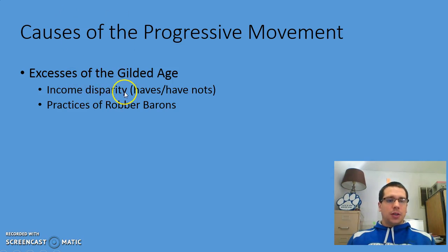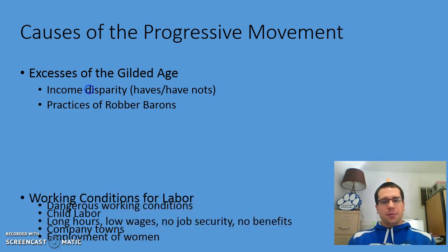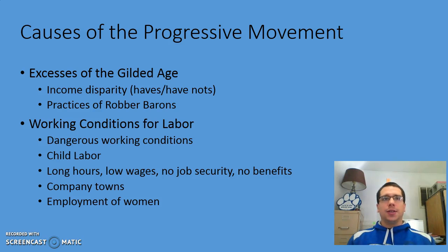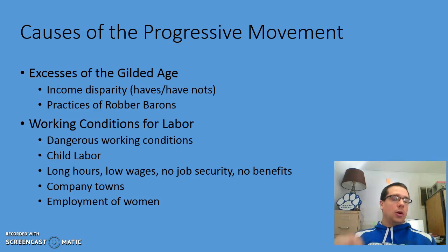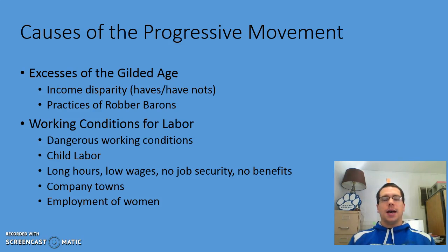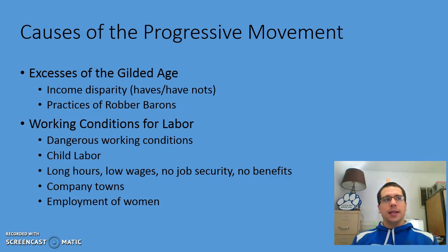The first part is the excesses of the Gilded Age — think the Industrial Revolution, people moving out west, robber barons like Rockefeller and Carnegie with all their wealth, while new immigrants are living in tenements. The disparity — the difference between the haves and the have-nots — was enormous. Working conditions were terrible: dangerous environments, breathing in soot and smog all day, working 16 to 17 hours a day, low wages like a dollar fifty a week, no job security, and child labor in dangerous factories.